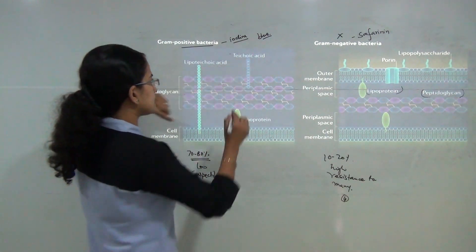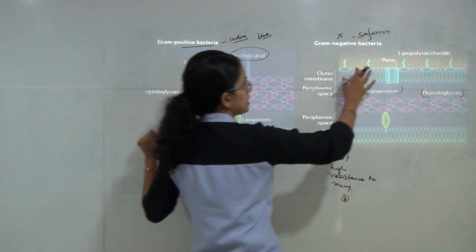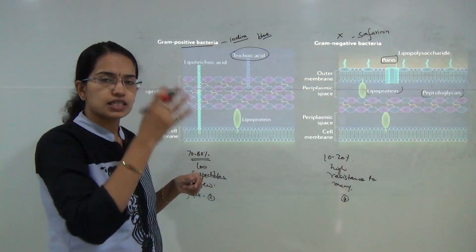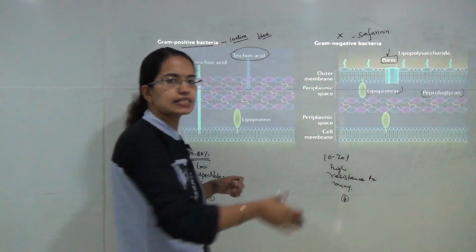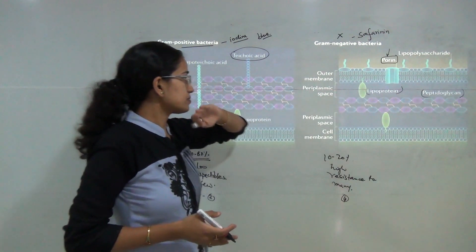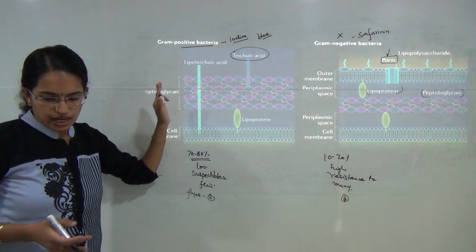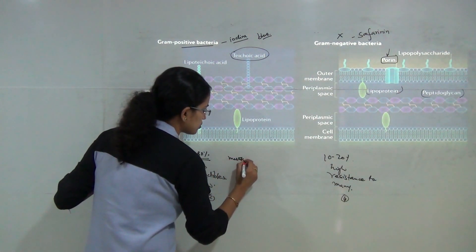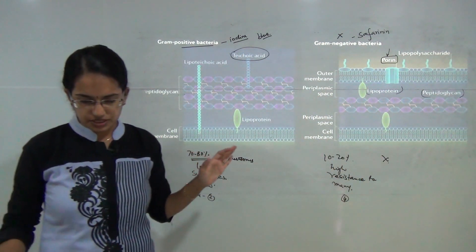Teichoic acid is present in the cell wall of gram positive bacteria but absent in gram negative. Gram negative, on the other hand, has porins — a 16-stranded protein outlet or hydrophilic channel that acts as a transporter, providing communication with the outer environment. Porins are present in gram negative and absent in gram positive. Mesosomes are prominent in gram positive but not prominent in gram negative bacteria.